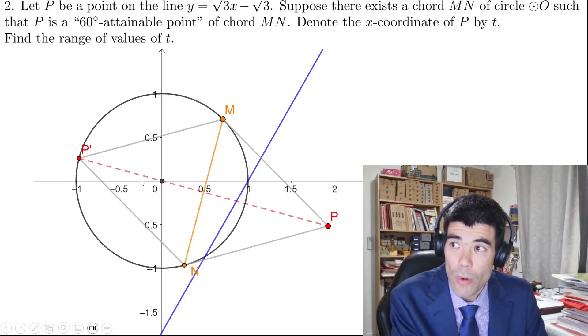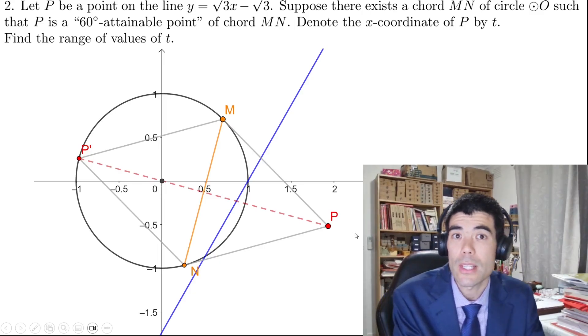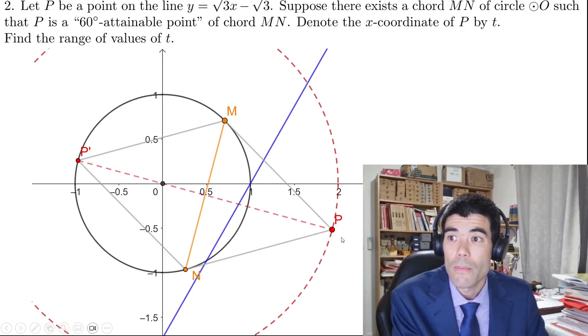So with the radius of one, the distance from the origin will be two units. So that gives us a locus for the maximum distance from the origin of all possible 60 degree attainable points.